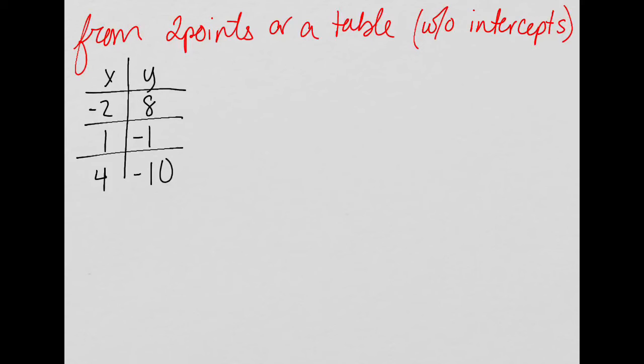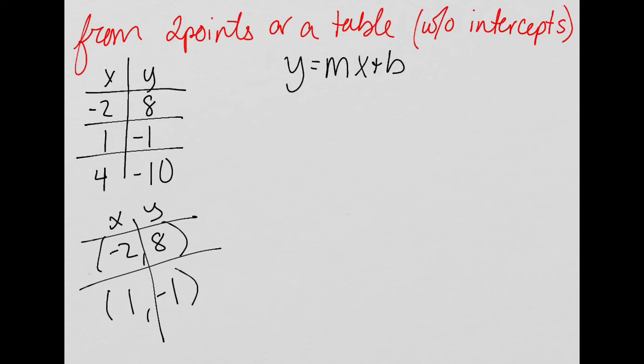Now I'm going to write the equation of a linear function in slope-intercept form, y equals mx plus b. But this time, instead of a graph, I'm given a table. You could also be given two points, like the same points from the table: (-2, 8) and (1, -1). It doesn't really matter which one. If you're given two points, you can easily make a table. So I need to identify my slope and y-intercept.